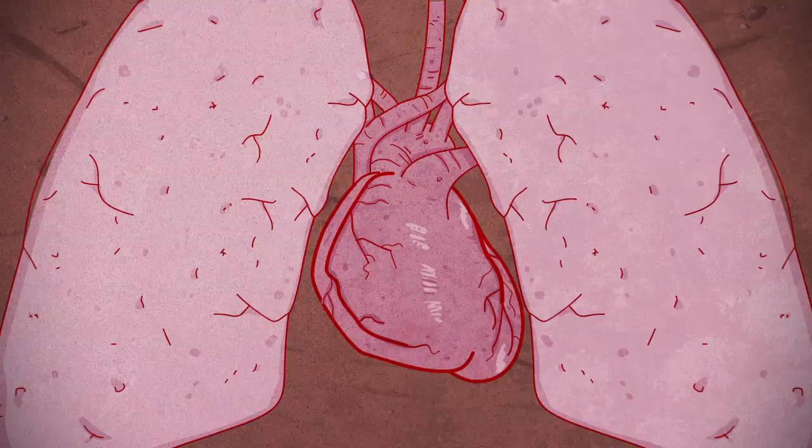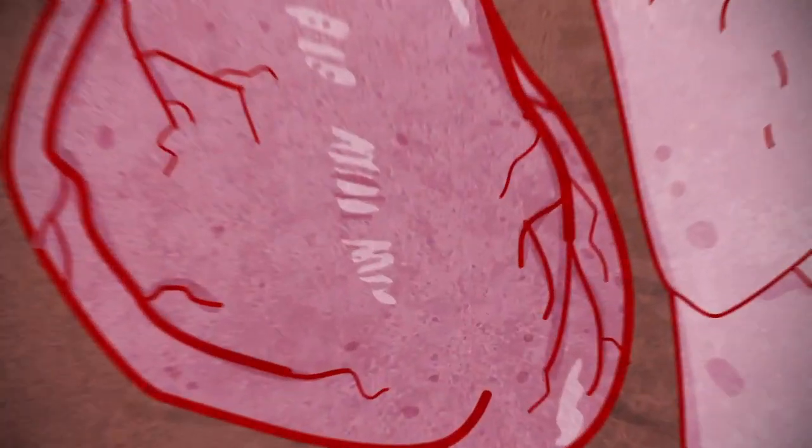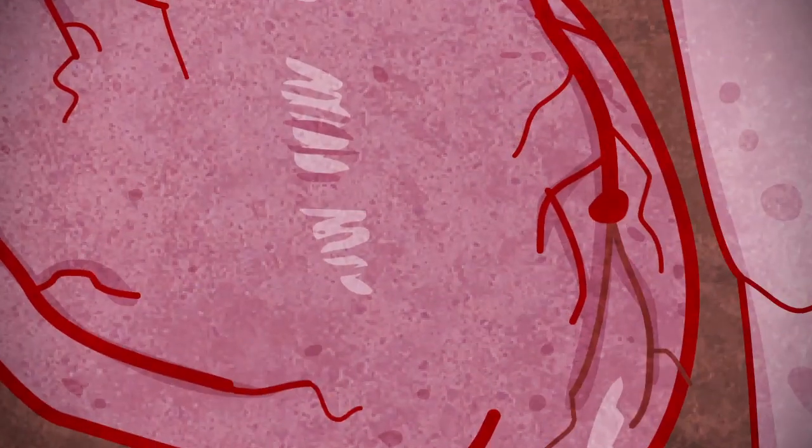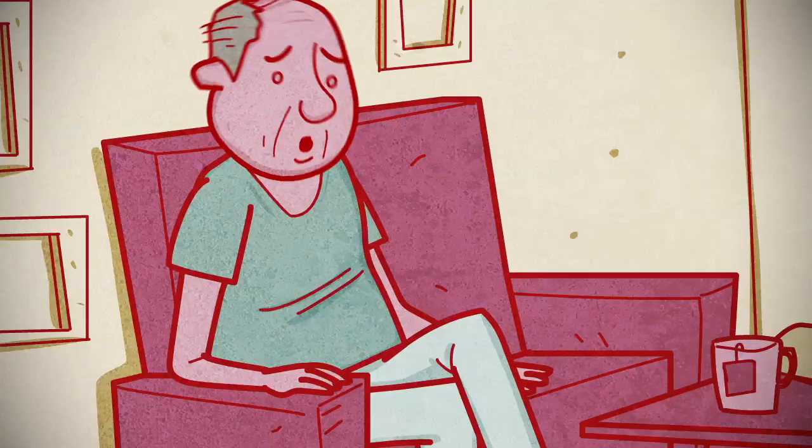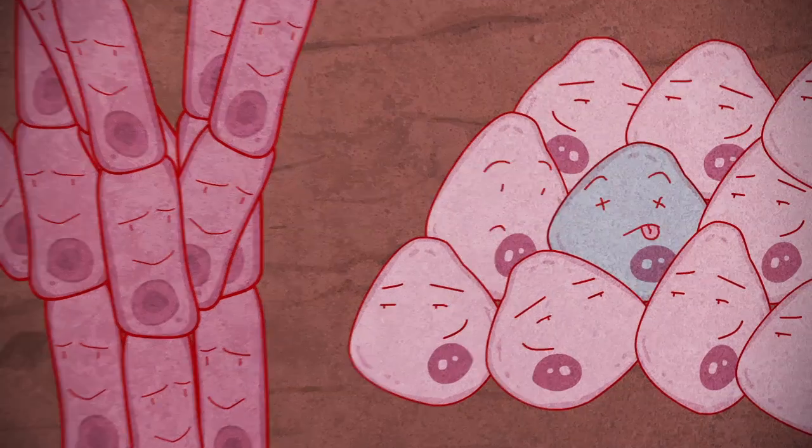A heart attack happens when one of the arteries leading blood to the heart gets clogged. The heart cells that don't receive oxygen die. Most cells divide to compensate for dead ones.